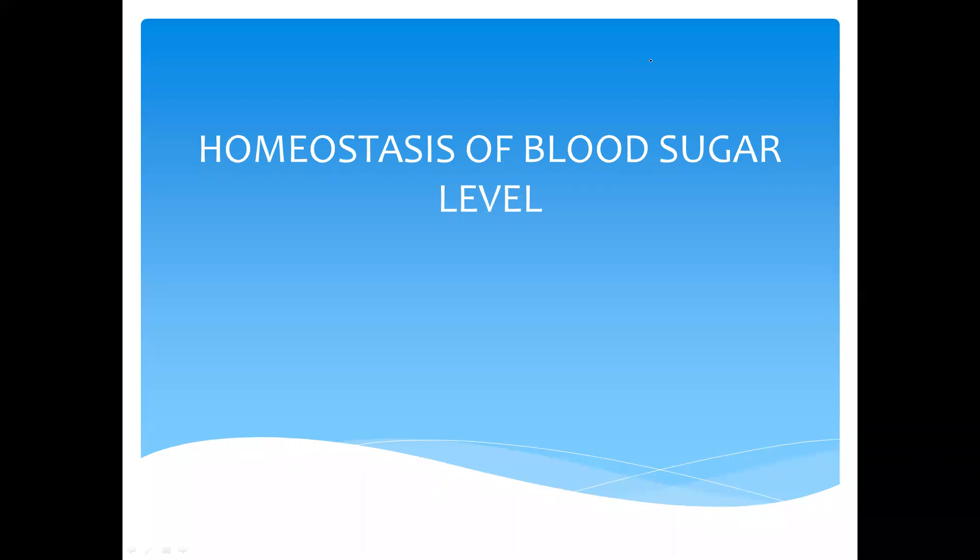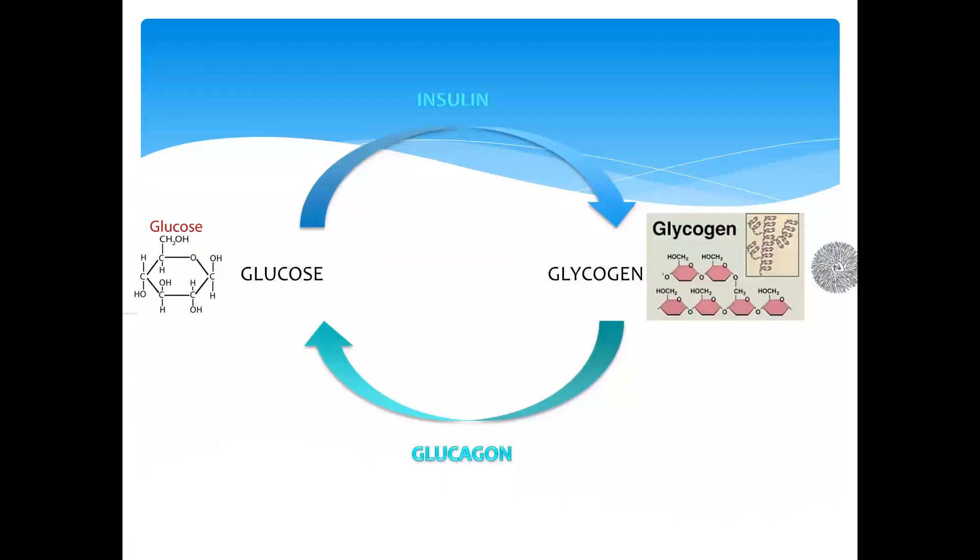We're looking at the homeostasis of blood glucose levels, which basically means how blood sugar levels are kept within the normal range. The general relationship is that we have insulin, the hormone which will convert excess glucose into glycogen.